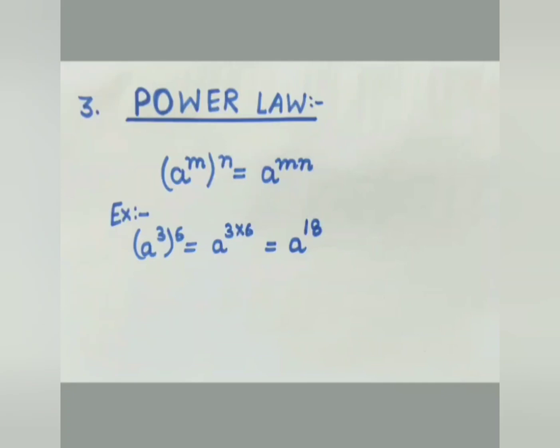As per our Power Law, the base is raised to the product of the two indices — we multiply them together. So the general form is: (a to the power m) to the power n equals a to the power m times n.